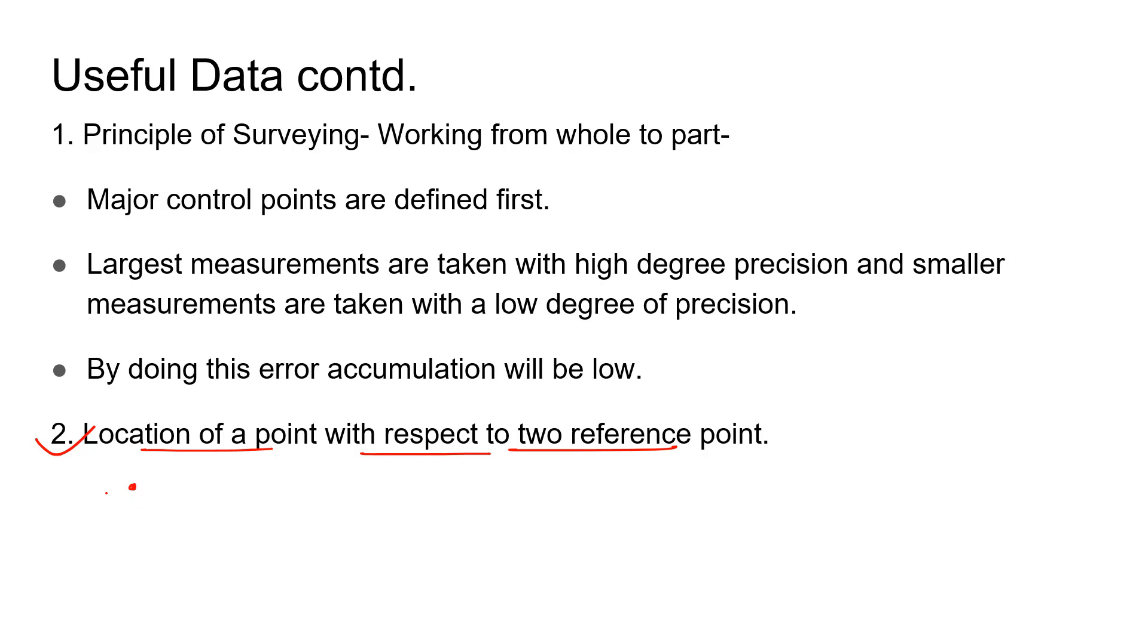Let's say we have point A here and point B here, and we need to find the location of point C at some distance from A and B. We will use a chain and find the distance from A to C—let's say this is L1—and find the distance from B to C, which is L2.